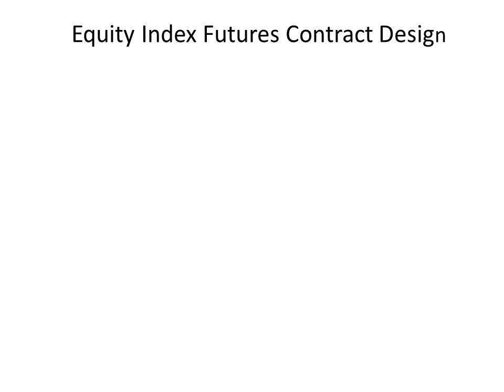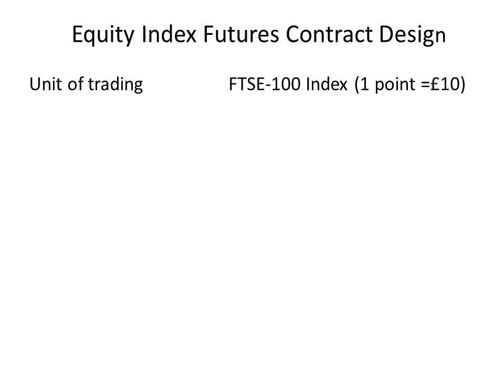Let's look at an example of an equity index futures contract which is described as being cash settled. In this instance the unit of trading is based upon the FTSE 100 index, and equity index futures have the concept of the index multiplier. In other words, in the case of the FTSE 100 index, each time the index price moves up or down a point, £10 will be made or lost by the holder of the futures contract. The futures contract is cash settled — you don't actually deliver the shares that make up the FTSE 100 index, and we'll see in a hedge example in just a moment how this works.